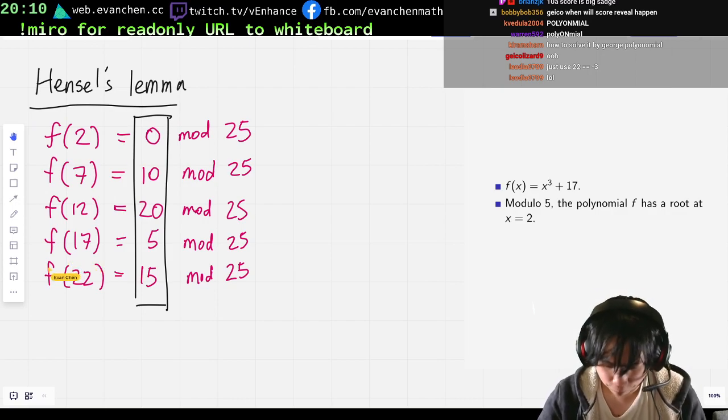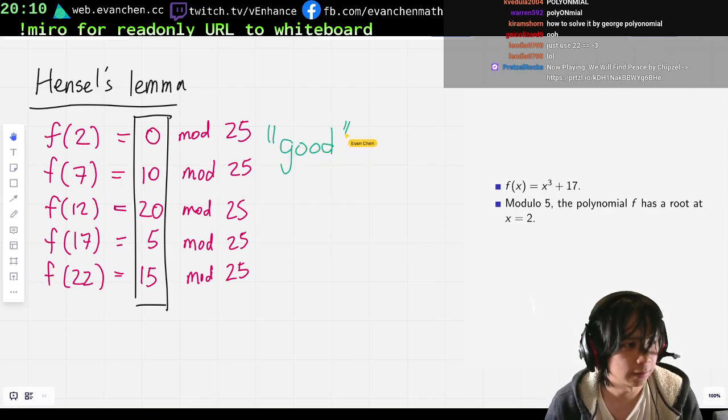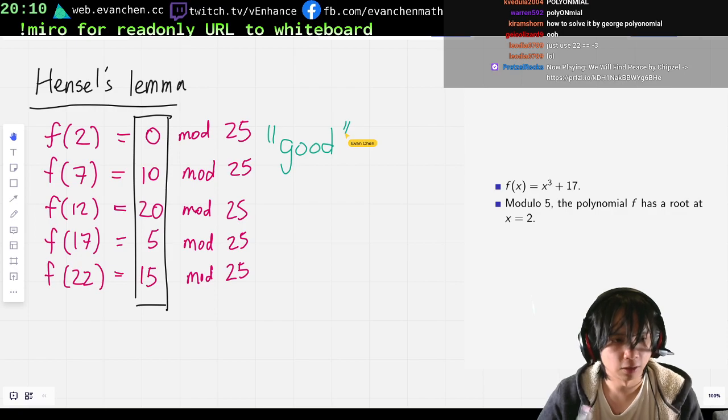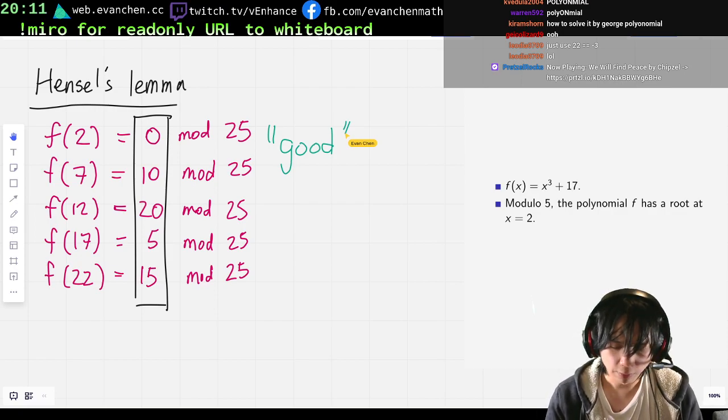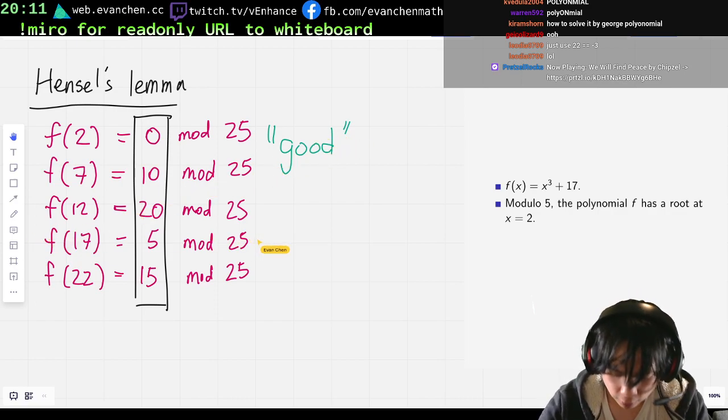So this is what I'll call like good behavior. What happens is that I get each of the possible residues mod 25 that's divisible by 5 exactly once. And in fact, they're always an arithmetic progression. So why is that happening? Well, we can dig a little into it. What's going on?